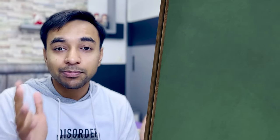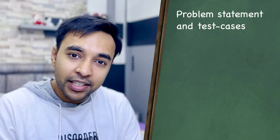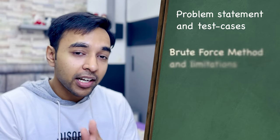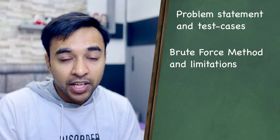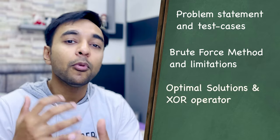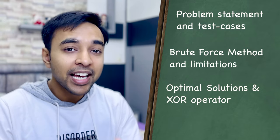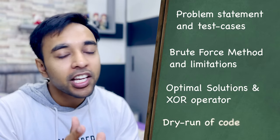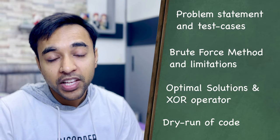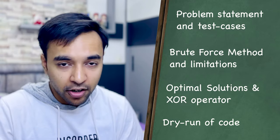Hello friends, welcome back to my channel. First, I will explain the problem statement and we will look at some sample test cases. Next, we will look at a brute force solution and see why that is time consuming. Going forward, we will try to find some optimal solutions and then ultimately use the XOR gate to arrive at a very efficient solution. After that, we will also do a dry run of the code so that you understand and visualize how all of this actually works in action. Without further ado, let's get started.